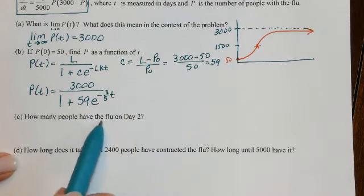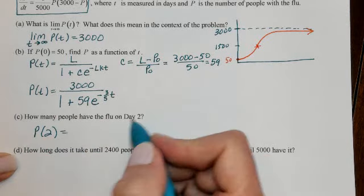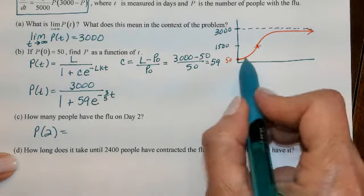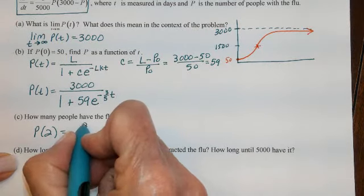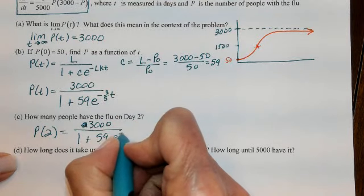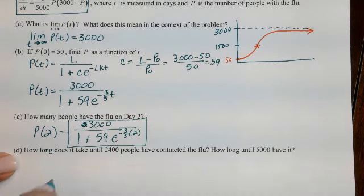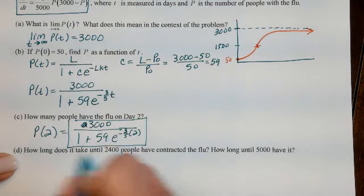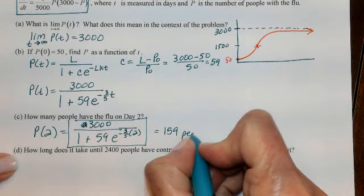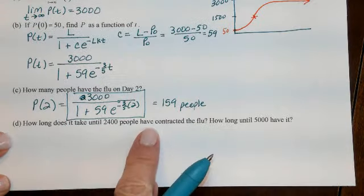How many people have the flu on day two? Now that we know p(t), we can get information about specific times. P(2) = 3000 / (1 + 59·e^(−(3/5)(2))), which works out to approximately 159 people.